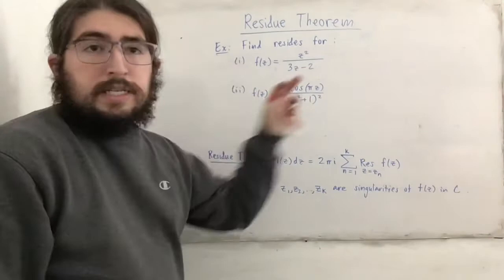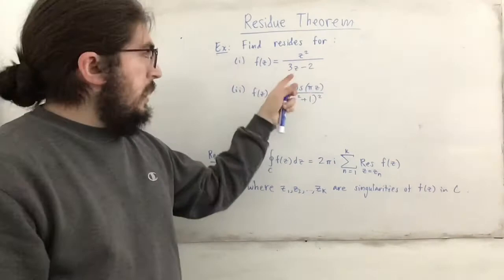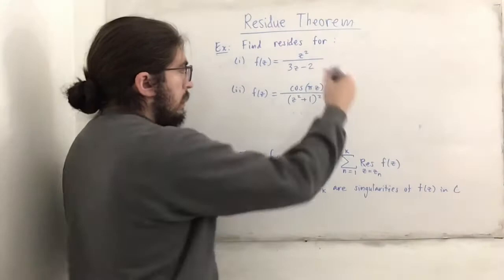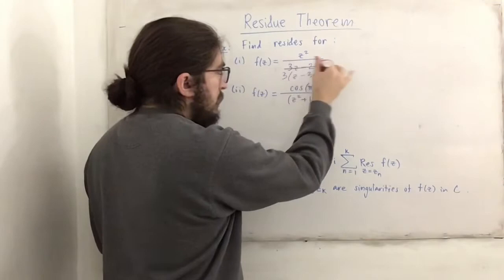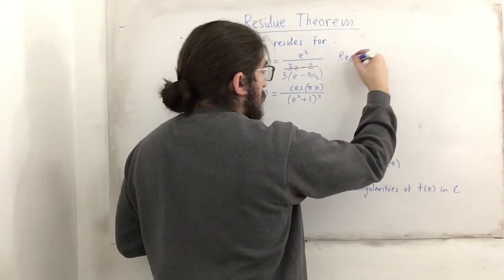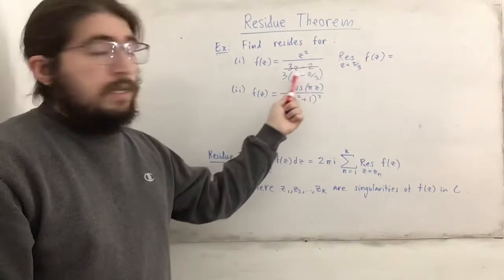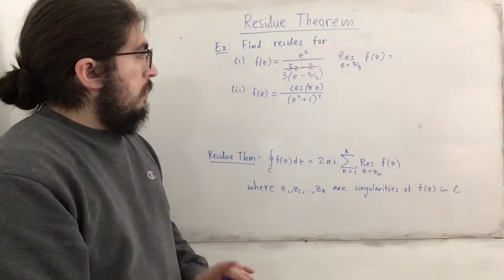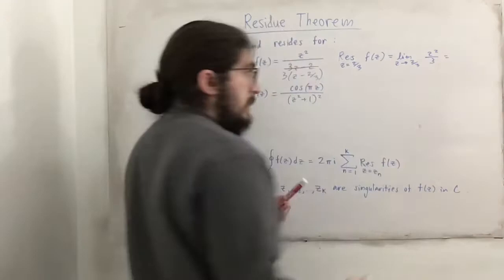For these next examples, we want to find the residues. I'm going to simplify by factoring out z minus the singularity. Setting the denominator equal to zero, it's easy to see that z equals 2/3. So z minus 2/3 is a factor of the denominator. We replace our denominator with this factor. The residue at z equals 2/3 of f of z is found by plugging in 2/3 everywhere, ignoring the factor that makes the denominator zero. We end up with the limit as z approaches 2/3 of z squared over 3, which gives us (2/3) squared over 3, that's 4/9 over 3, which is 4/27. That is our residue.